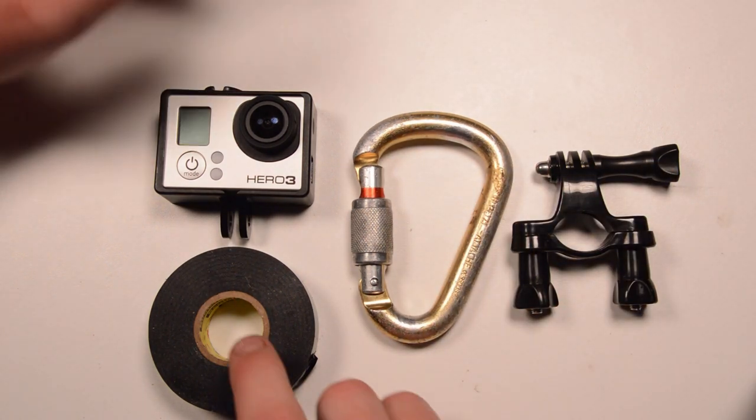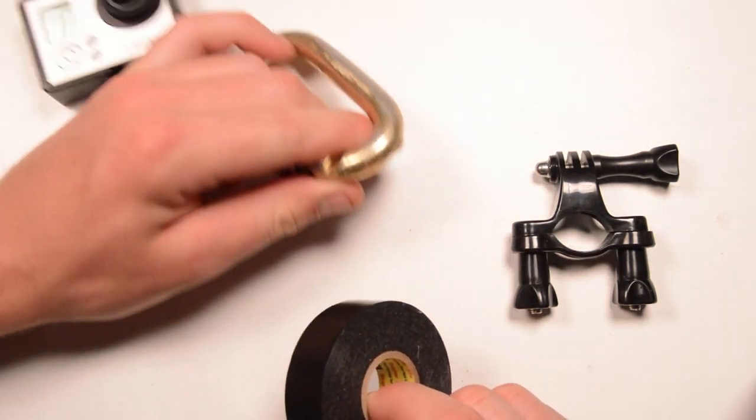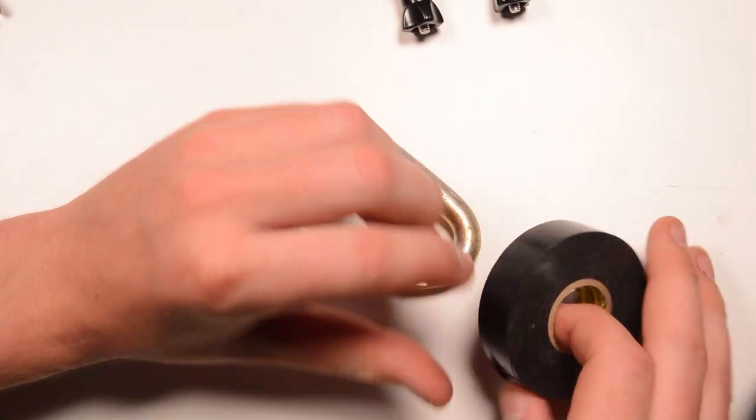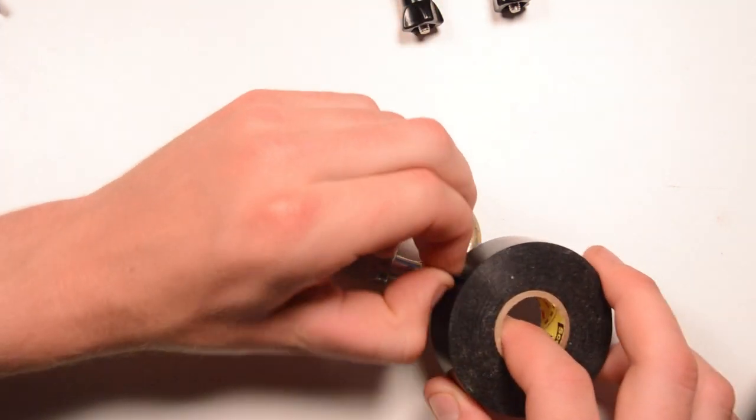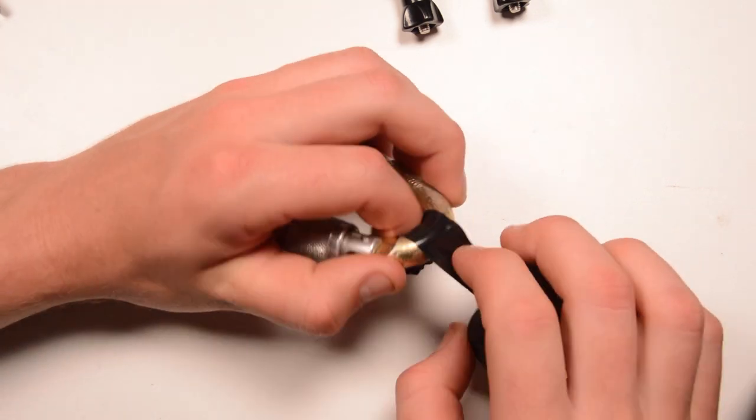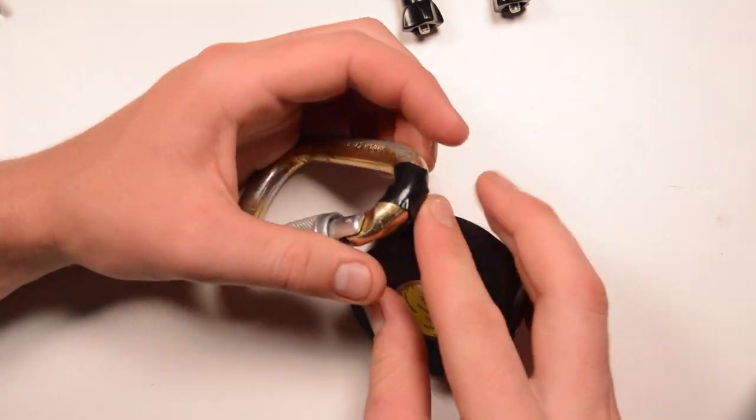So to make this mount, we're going to take our carabiner and our tape, and we're going to wrap a bunch of tape around the bottom of our carabiner.